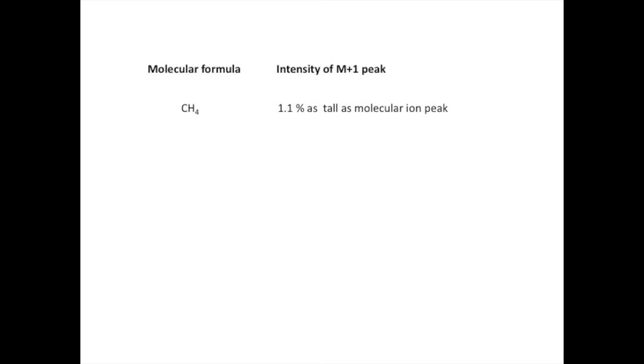So what is the implication? In a spectrum of methane, we would expect to find a peak at M plus 1 that is 1% as tall as the molecular ion. In ethane, or any other molecule with two carbons, we would expect the heavy isotope peak to be 2.2% as tall as the molecular ion at M. A 3-carbon molecule would have an M plus 1 peak that is 3.3% as tall. A 4-carbon molecule will have an isotope peak that is 4.4% as tall, and so on.